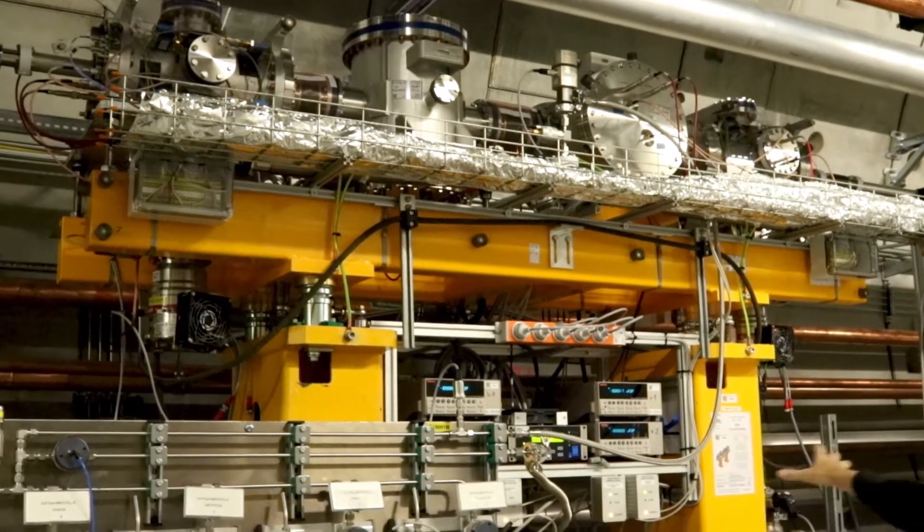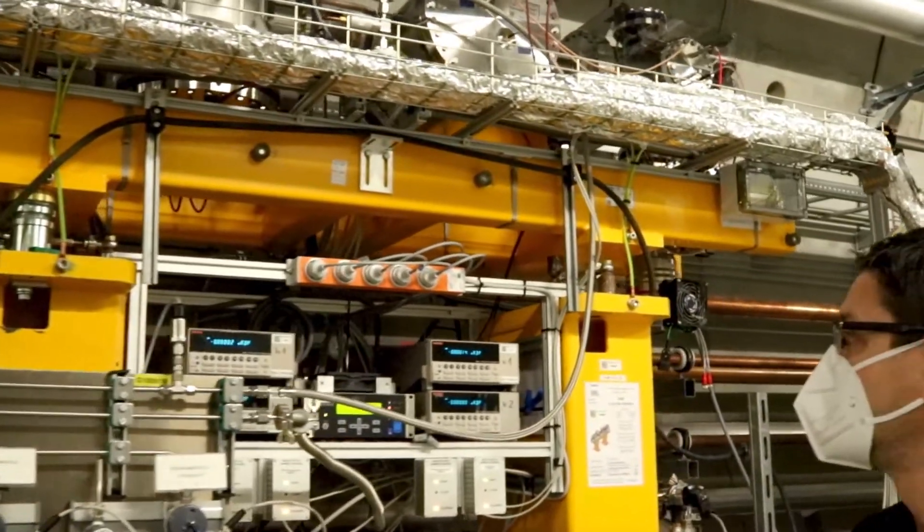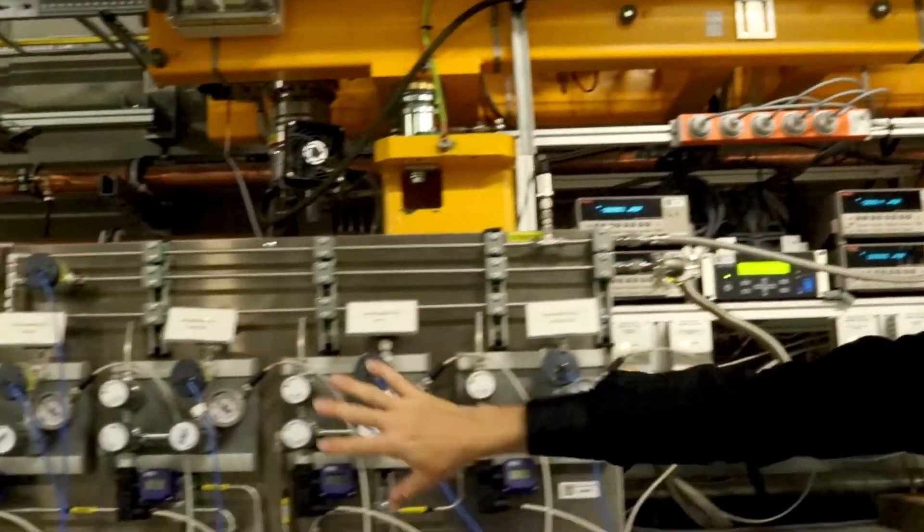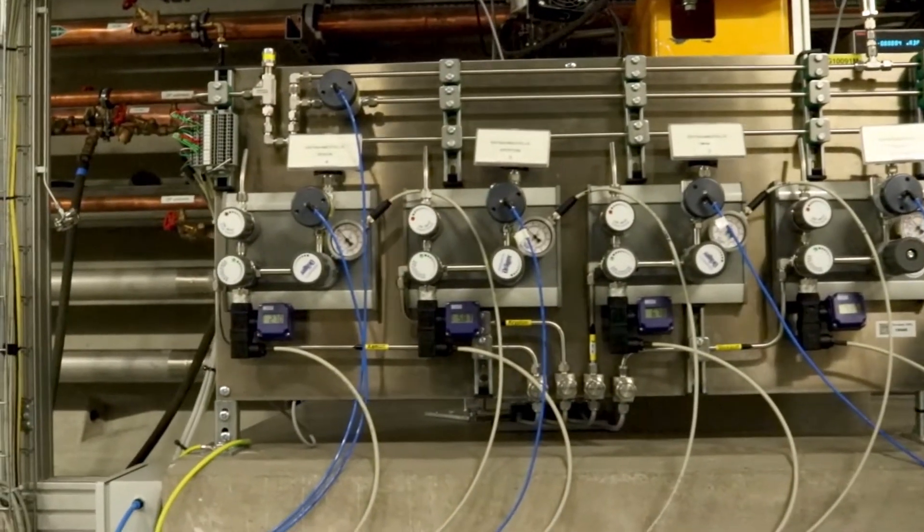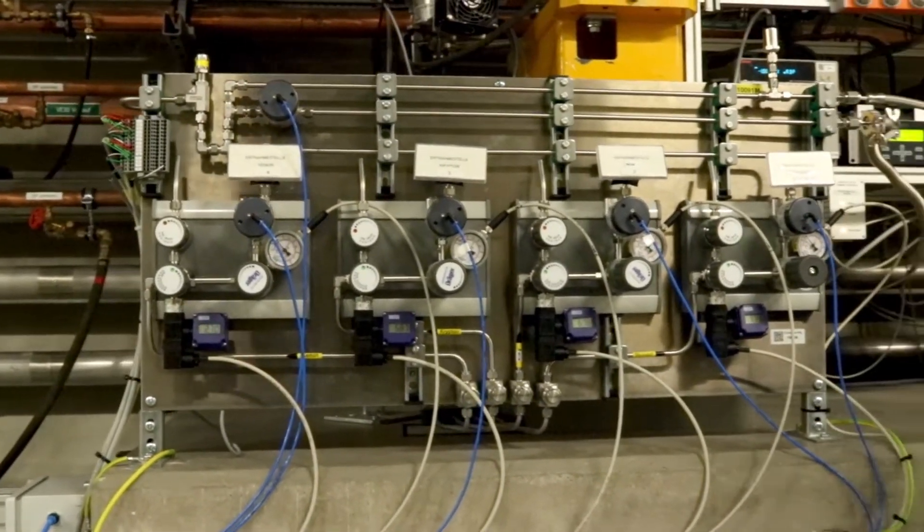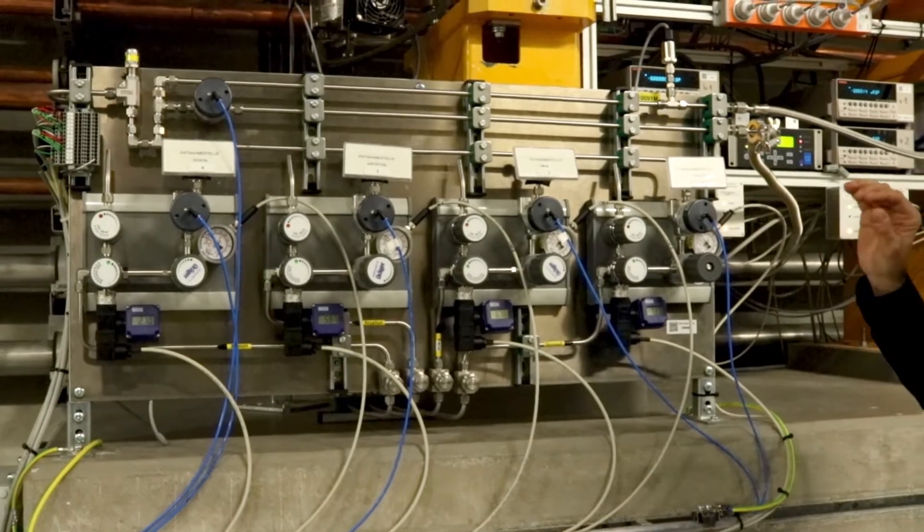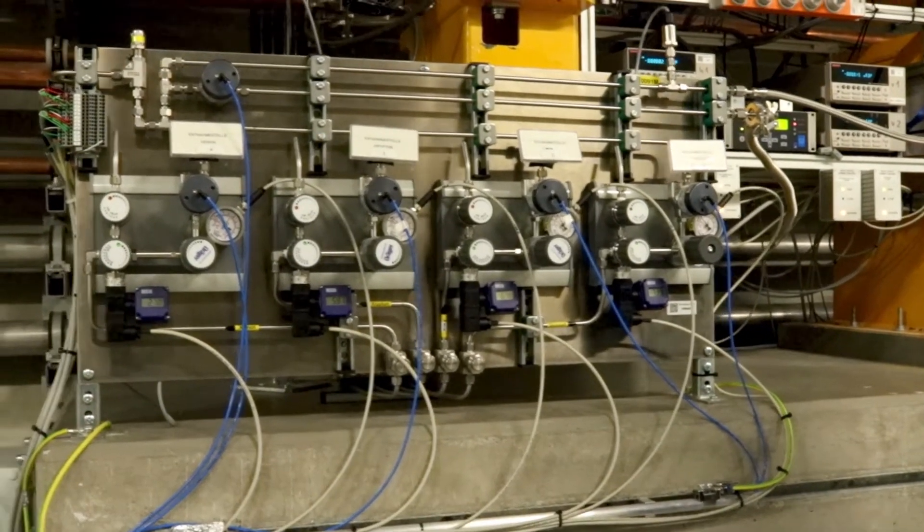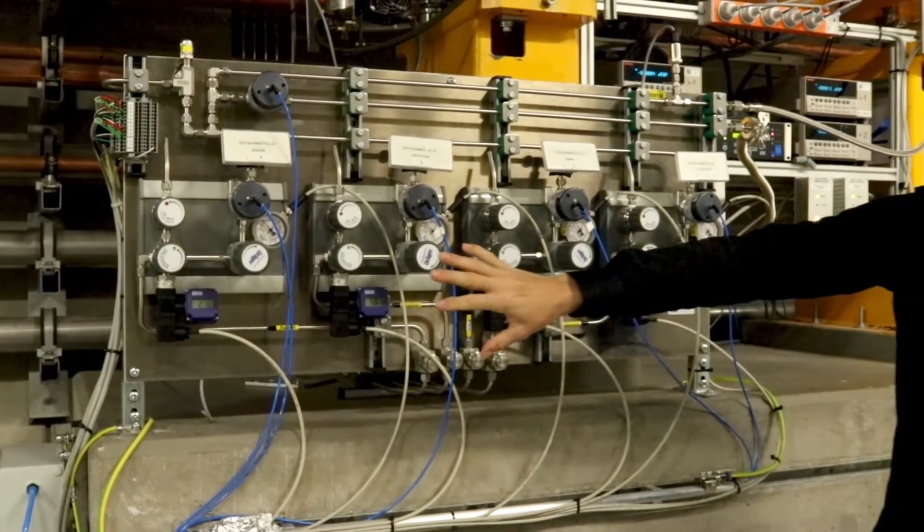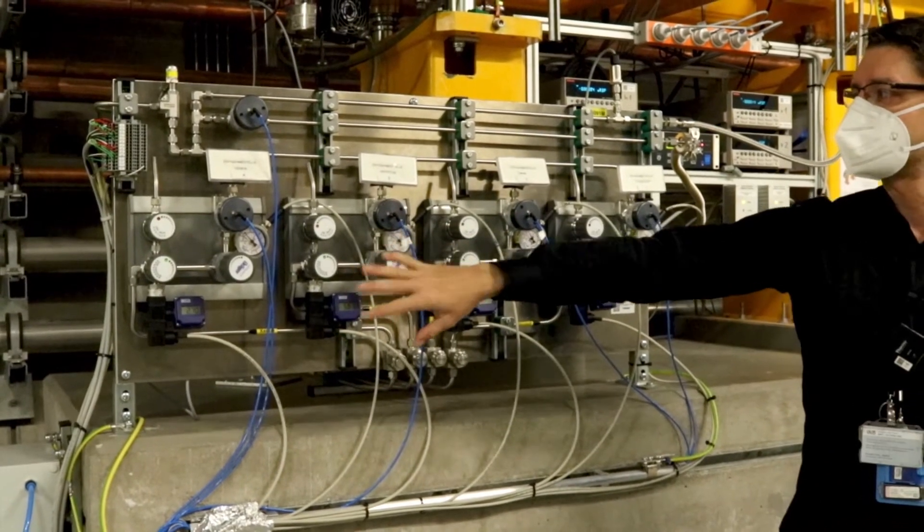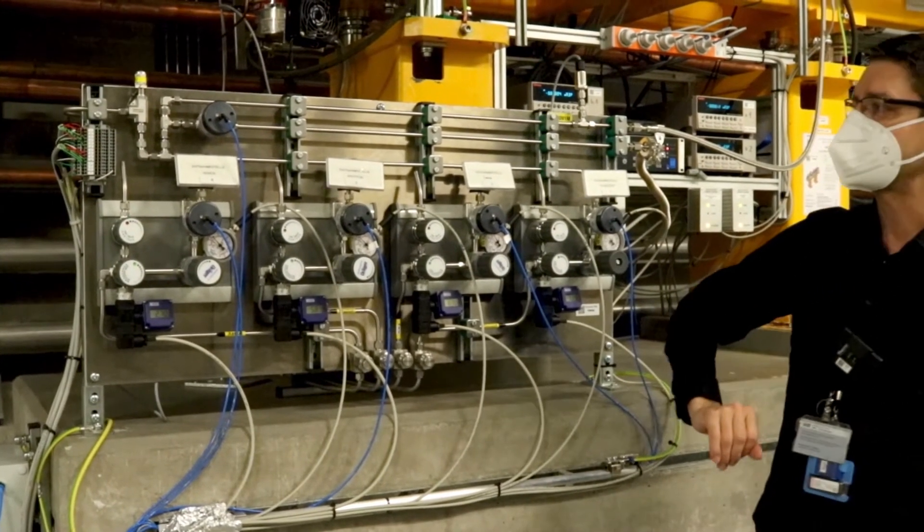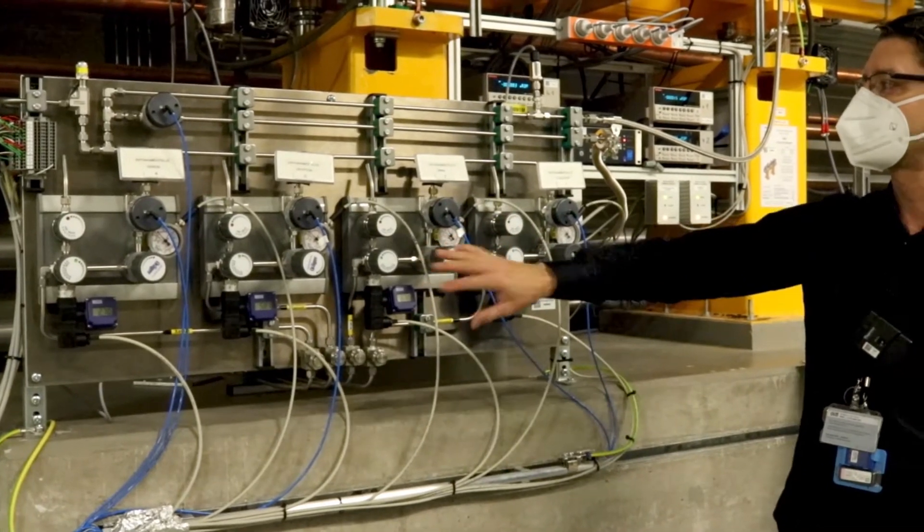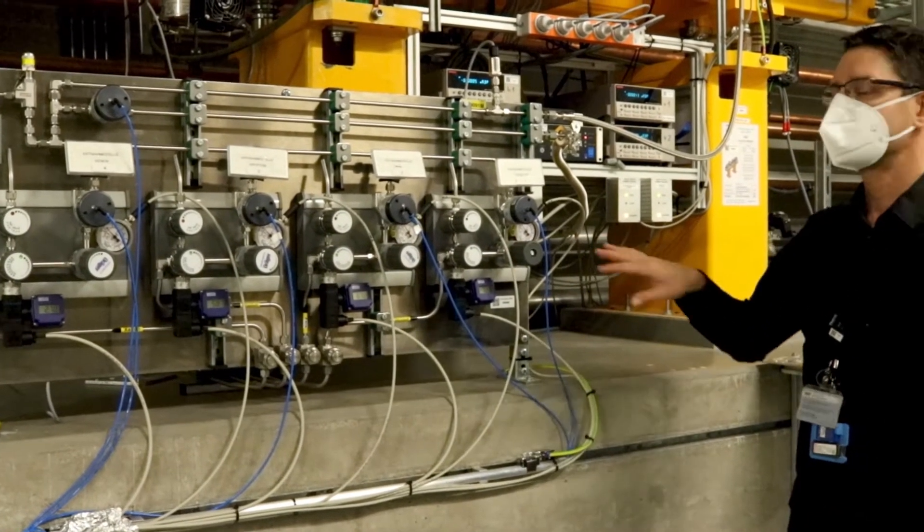Below we see some local electronics. To the left down here, this is the gas distribution panel. It allows to select by remote control the target gas which we are using. We have four options: xenon, which we usually use for hard X-rays, krypton, neon, and nitrogen.